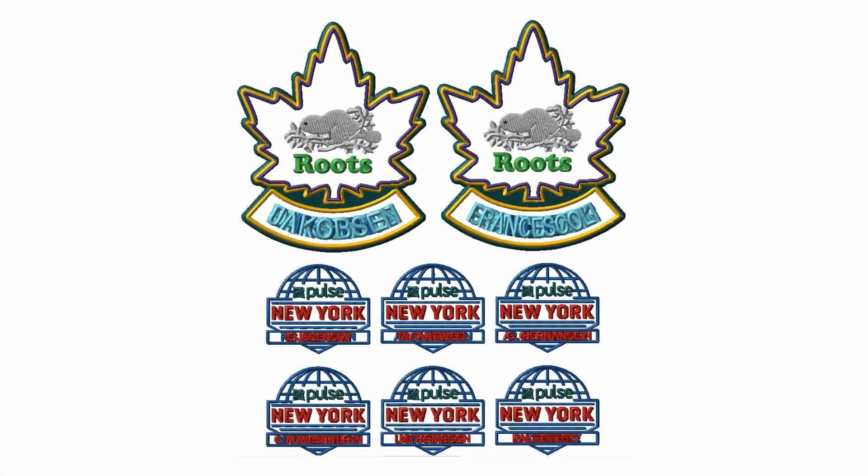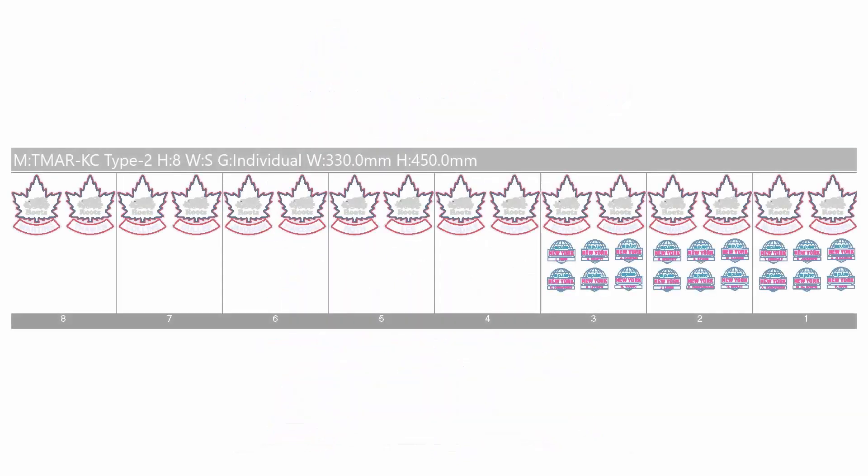This is an example for a head grouping project. For one larger patch and one smaller patch, each one of the patches will have individual names. We will distribute the larger patches in groups of two on each of the eight heads, and the smaller patches in groups of six on three of the embroidery heads.